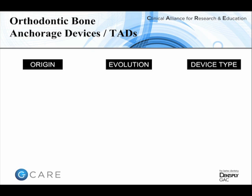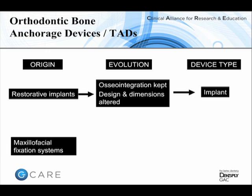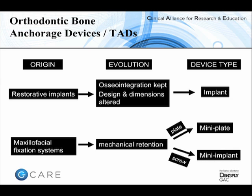We best view bone anchorage devices or TADs in several categories according to their evolution. Modified restorative implants relying on osseointegration, when reduced in dimensions, produce orthodontic implants such as the original palatal implants used at the turn of the century. Alternatively, plating kits from maxillofacial surgery relying on mechanical retention — not osseointegration — when modified produce a mini-plate, and when the screw is modified it produces a mini-screw, or mini-implant.